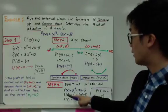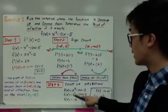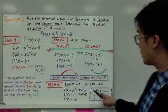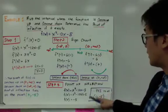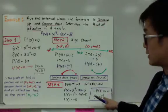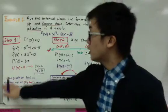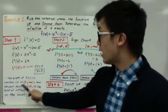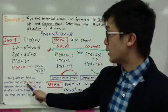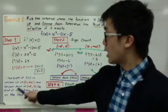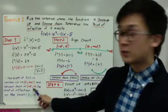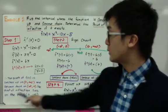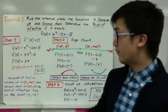So f of 0 equals 0 cubed minus 12 times 0 minus 5. Therefore, f of 0 equals negative 5, and the point of inflection is at (0, negative 5). To summarize the answer: the graph of f of x is concave up on (0, positive infinity) and concave down on (negative infinity, 0), and the point of inflection lies at (0, negative 5).